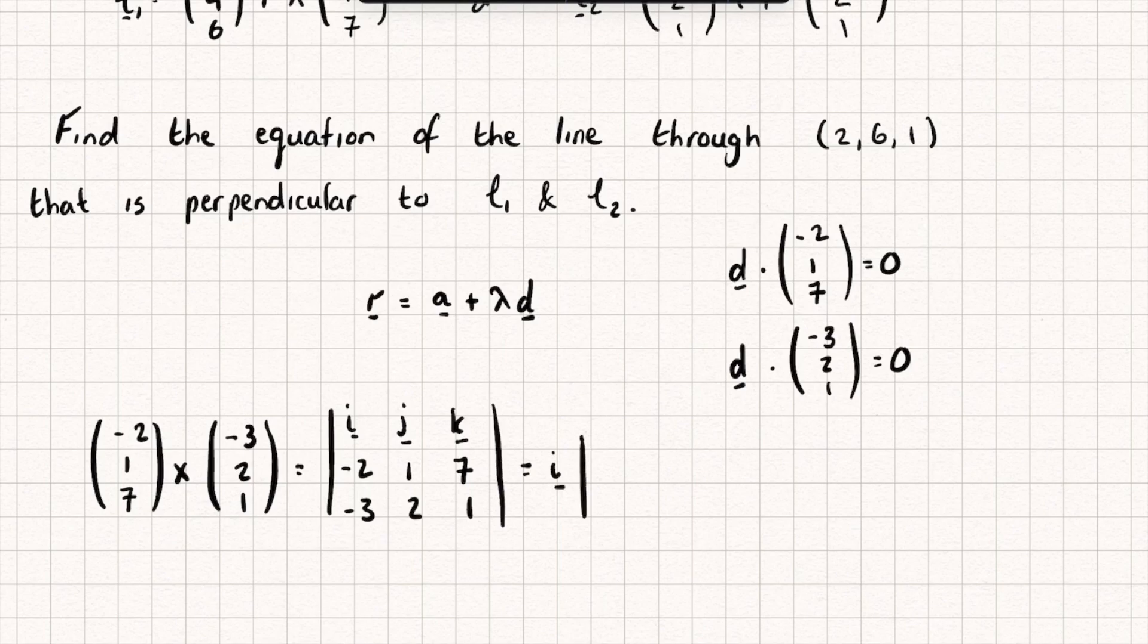It's going to be I multiplied by the determinant of (1,7; 2,1), minus J multiplied by the determinant of (-2,7; -3,1), plus K multiplied by the determinant of (-2,1; -3,2).